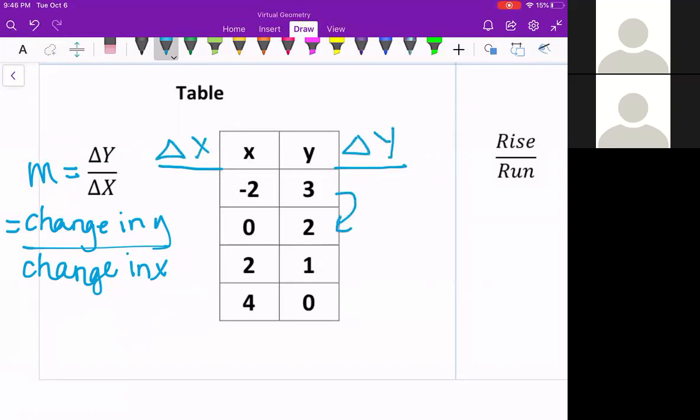So I'm going to add an extra column here for change in y and change in x. My y values, it only takes one pair. I don't have to go all the way down and check all of them. I just need one set. So from 3 to 2, we went down. So that's a minus 1. From negative 2 to 0, we went up. So plus 2. So my changes in y is a negative 1. My changes in x is a positive 2, meaning my slope is a negative 1 half. And there's my slope.